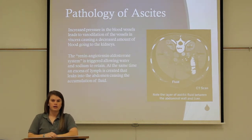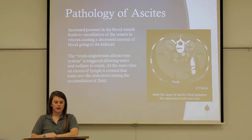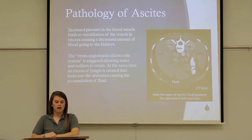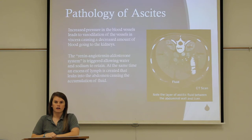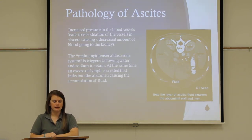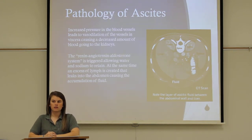Pathology of ascites. It begins with increased pressure in the blood vessels that leads to vasodilation of the vessels in the viscera, causing a decreased amount of blood going to the kidneys. The renin-angiotensin-aldosterone system is triggered, allowing water and sodium to retain. At the same time, an excess of lymph is created that leaks into the abdomen, causing the accumulation of fluid to occur.